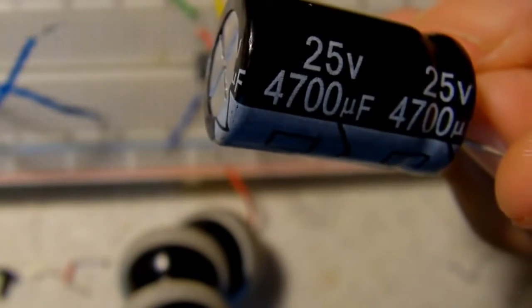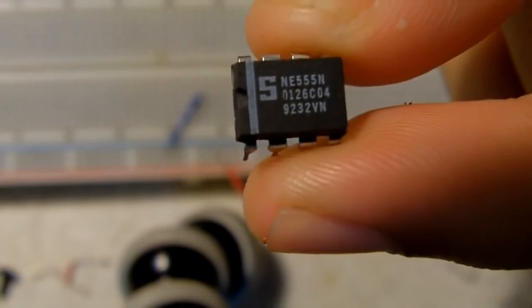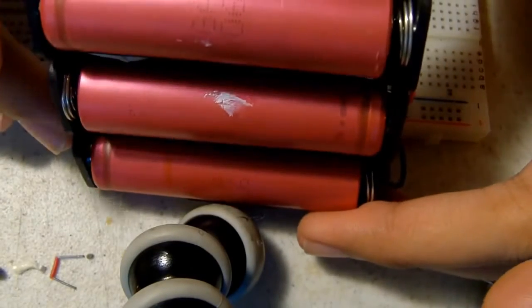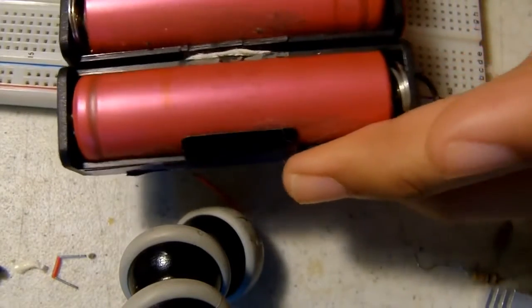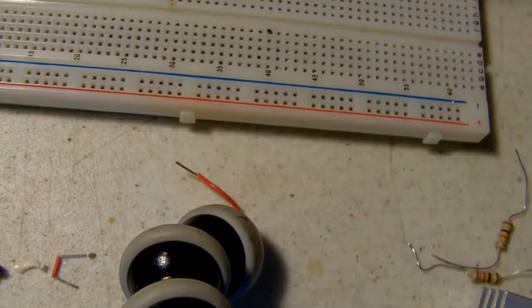You'll also need two or three diodes depending on what you want to power, another capacitor to smooth out the voltage going to what you want to power, a 555 timer chip, and a 12 volt power source. I will be using three lithium ion batteries giving me around 12 volts.